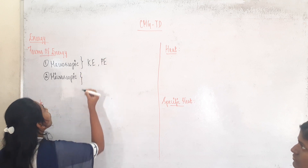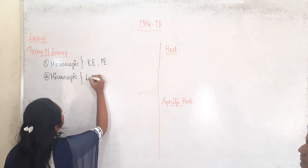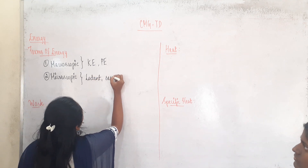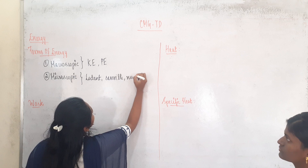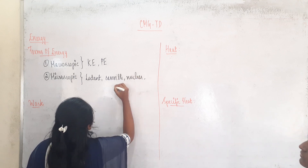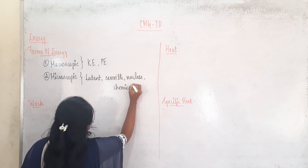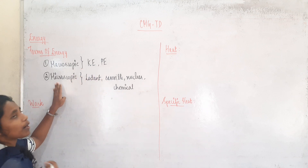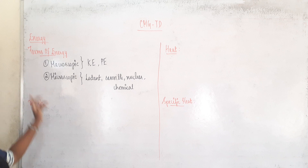For microscopic, there are many energies like latent heat energy, sensible heat energy, nuclear energy, chemical energy. These energies, which are smaller in amount than kinetic and potential energy, come under microscopic energy. So these are the forms of energy.